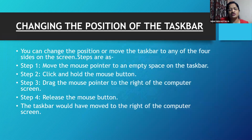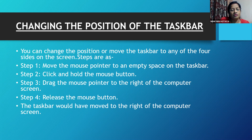You can change the position or move the taskbar to any of the four sides of the screen. Step 1: Move the mouse pointer to an empty space on the taskbar. Step 2: Click and hold the mouse button. Step 3: Drag the mouse pointer to the right of the computer screen. Step 4: Release the mouse button. The taskbar would have moved to the right of the computer screen.